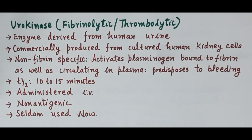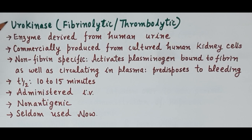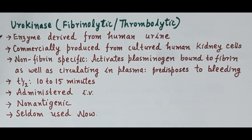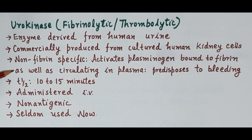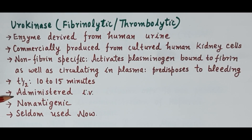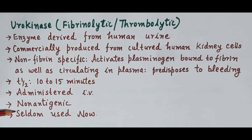The second class of fibrinolytics consists of urokinase, an enzyme derived from human urine and commercially produced from cultured human kidney cells. Urokinase is non-fibrin specific — it activates plasminogen bound to fibrin as well as plasminogen circulating in the plasma — and therefore predisposes to bleeding, showing a higher risk of bleeding. Plasma half-life of urokinase is 10 to 15 minutes and it is administered by the intravenous route. Unlike streptokinase, urokinase is non-antigenic, though it is seldom used now.